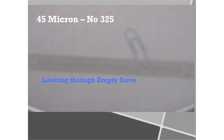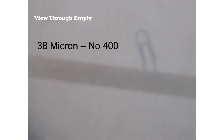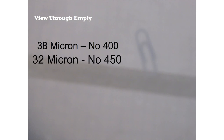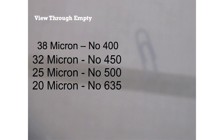Sieves with opening sizes less than 45 microns — namely a number 400 at 38 microns, a number 450 at 32 microns, a number 500 at 25 microns, and a number 635 at 20 microns — usually require special processes such as vacuum or ultrasonic assists to get effective separation.